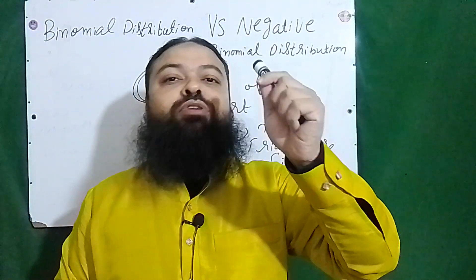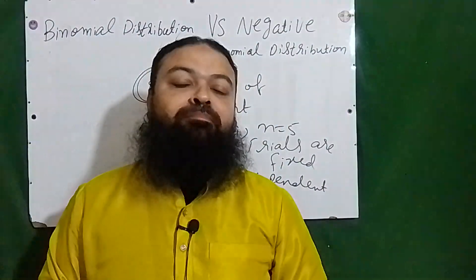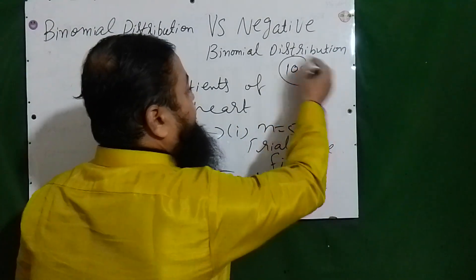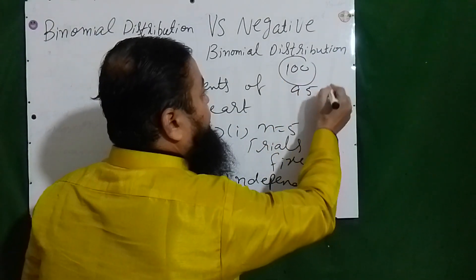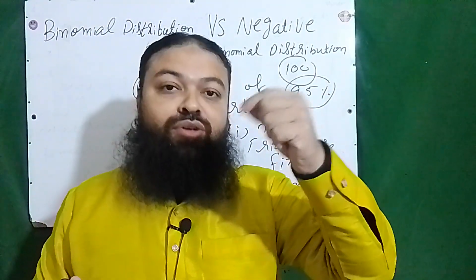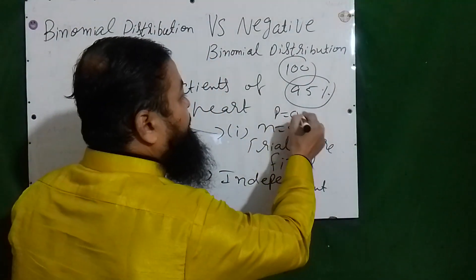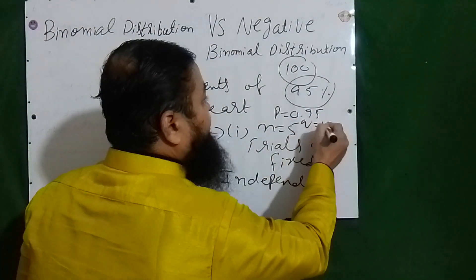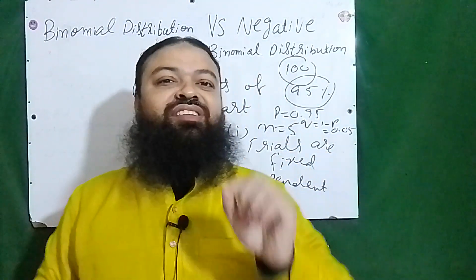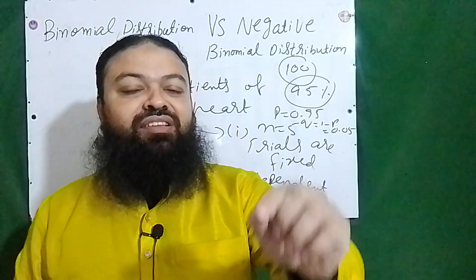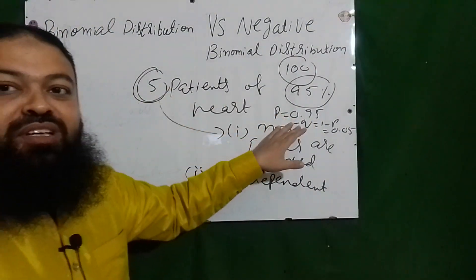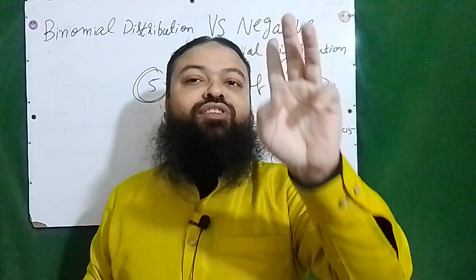The third property is that the probability of success is fixed. From historical data, if 100 patients came to that hospital and 95 survived, then p equals 0.95 and q equals 1 minus p, which is 0.05. So the probability of survival for a patient is 0.95, and this is the same for all five patients.